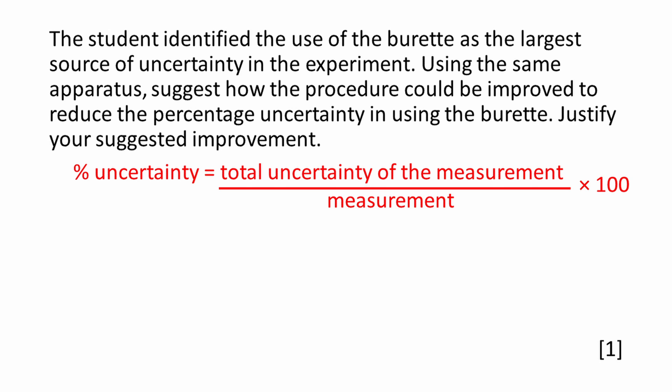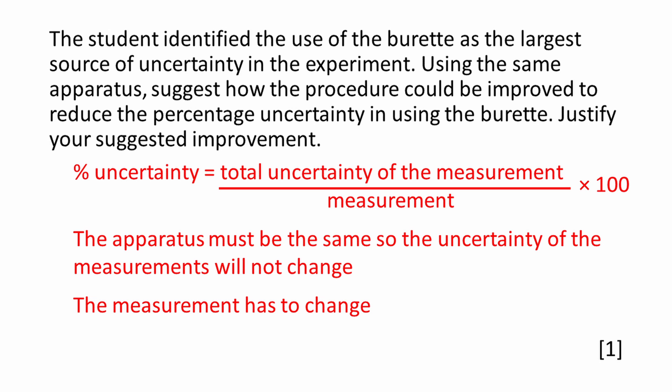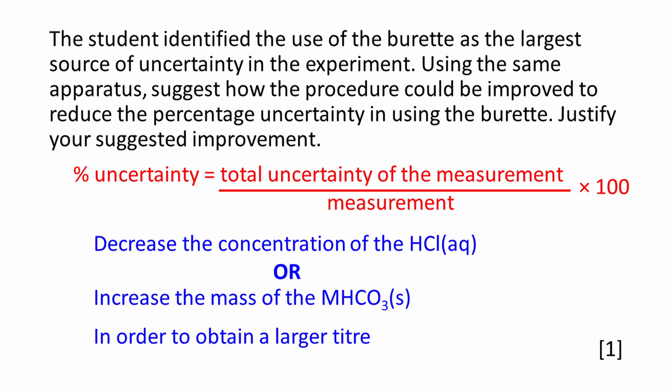Percentage uncertainty is equal to the total uncertainty of the measurement, divided by the measurement, multiplied by 100. We have to use the same apparatus, so the uncertainty of the measurement will not change. Instead, the measurement has to change. We could either decrease the concentration of the HCl, or increase the mass of the MHCO3. Both of these changes would result in a larger titer.